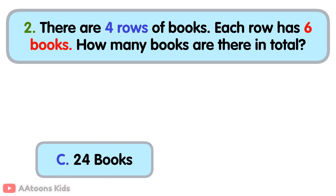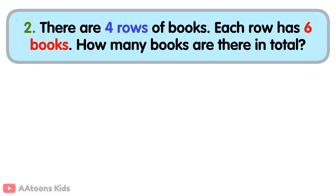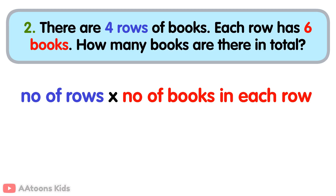Twenty-four books. To find the total number of books, we need to multiply the number of rows by the number of books in each row. Total number of rows is four. Total number of books in each row is six. Now, four multiplied by six is twenty-four. So, there are twenty-four books in total.